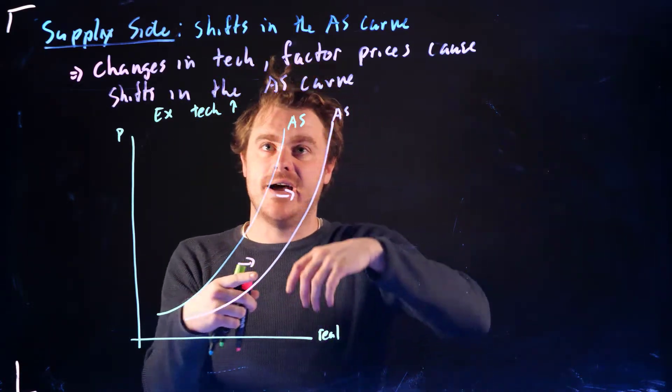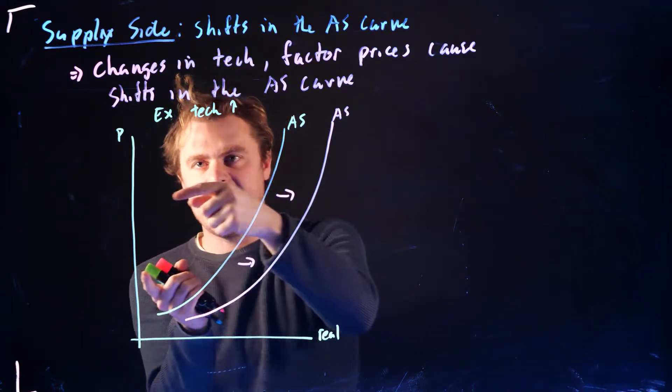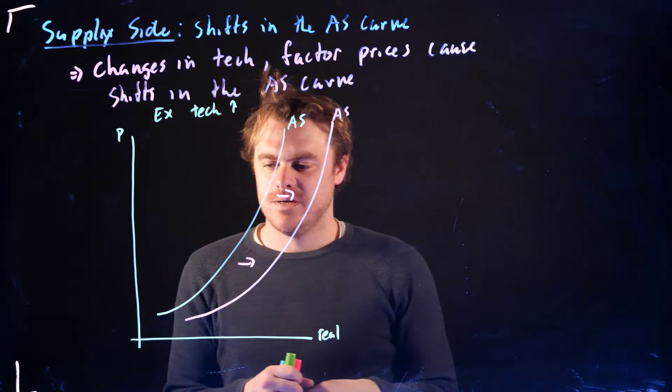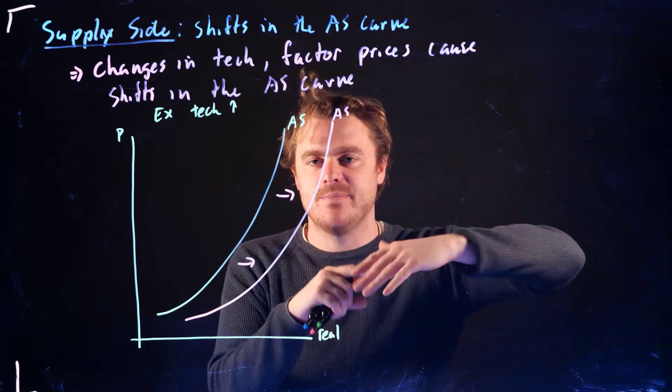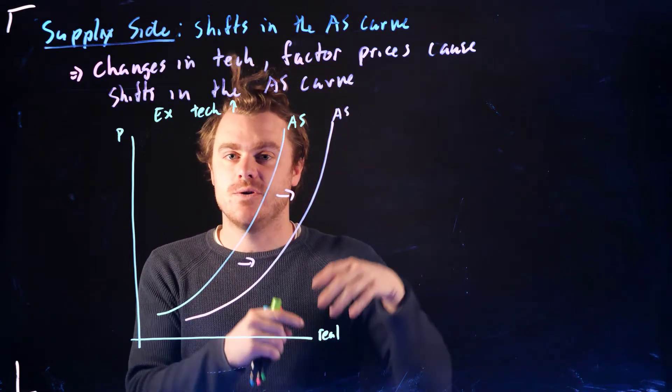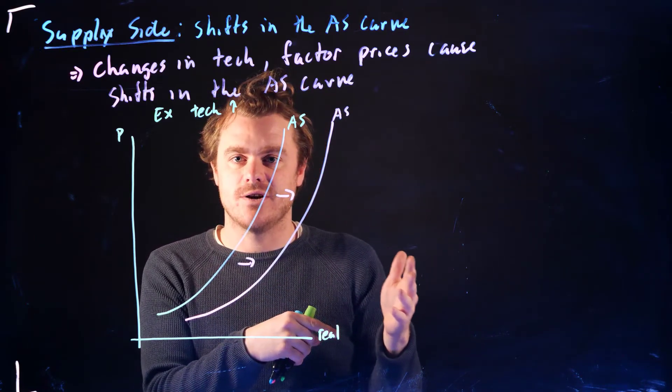If we had an increase in the factor prices, that's going to cause that AS curve to shift to the left. So I think it's pretty intuitive which direction it shifts. We don't have all those mechanics like behind the AD curve, or we're not modeling them anyway. And so this is what the supply side of the economy looks like and what's going to shift this AS curve.